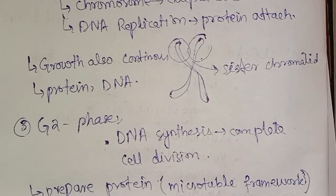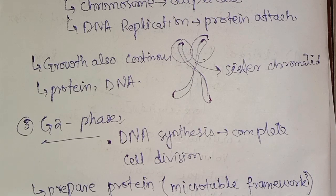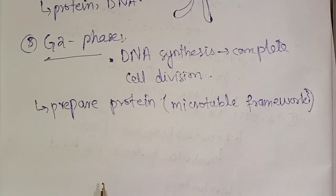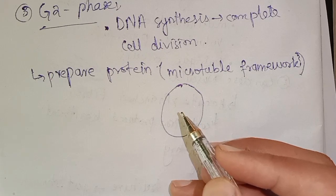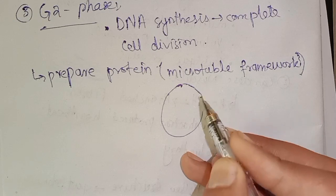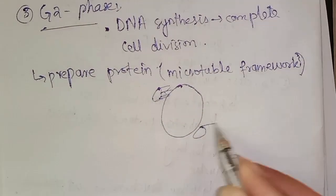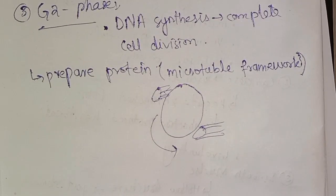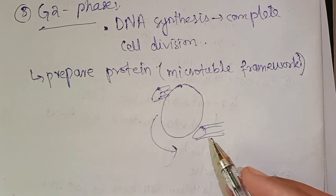The final event in interphase is the replication of the centrioles and their movement to either side of the nucleus. At the same time, microtubules appear radiating from the area of each centriole. That concludes the discussion of interphase.